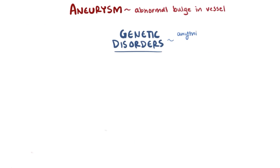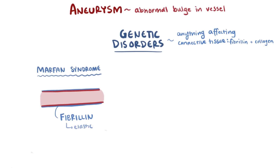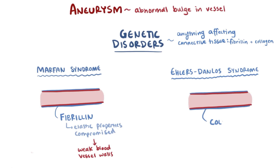Genetic disorders affecting your body's ability to properly form connective tissues like fibrillin or collagen also weaken the blood vessel walls. People with Marfan syndrome have weakened blood vessel walls because the elastic properties found within fibrillin are impaired, and people with Ehlers-Danlos syndrome are more likely to develop aneurysms because their ability to form collagen proteins is disrupted.